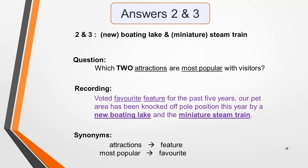Answers 2 and 3 are Boating Lake (or New Boating Lake) and Steam Train (or Miniature Steam Train). The question asks: which two attractions are most popular with visitors? The recording states: voted favourite feature for the past five years, our pet area has been knocked off pole position this year by a new boating lake and the miniature steam train. The synonyms used are 'feature' for 'attractions' and 'favourite' for 'most popular'. The phrase 'knocked off pole position' acts as a distractor — the speaker first mentions the pet area as the long-time favourite before revealing the new most popular attractions.